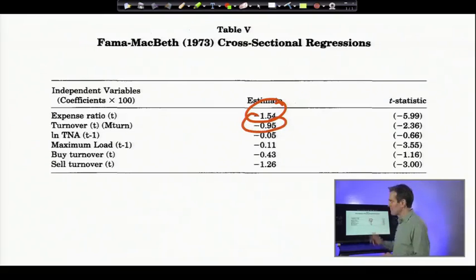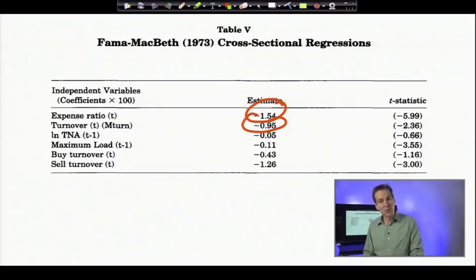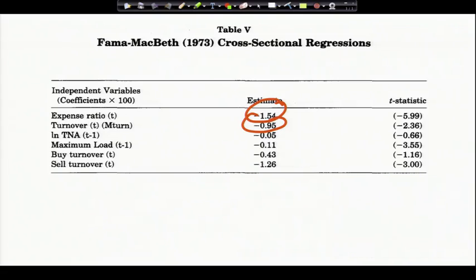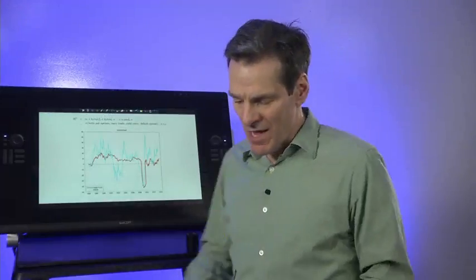Similarly, turnover when the fund buys and sells a lot of stocks. Are they getting rid of the dogs buying the new stocks? No, it turns out that every time they buy or sell a stock, you lose about 95 basis points, which is pretty much a good estimate of the round-trip transactions cost. A very depressing view of mutual fund performance seen in the data. Let's go on.